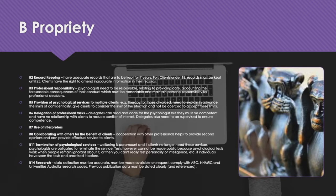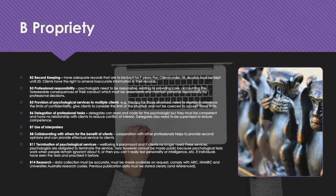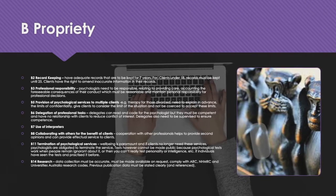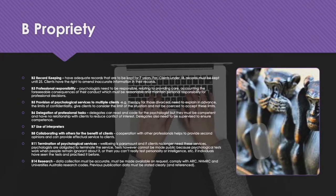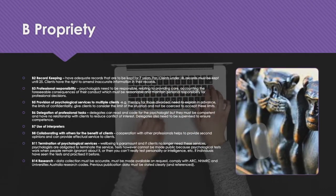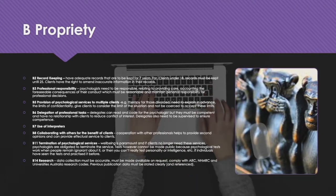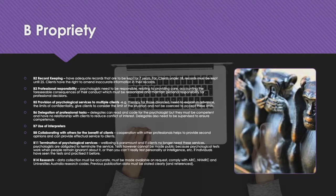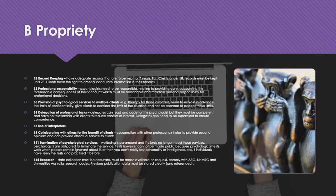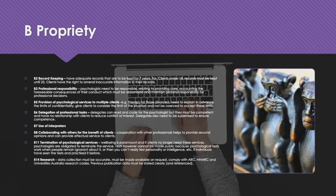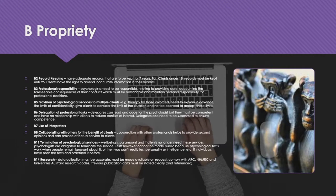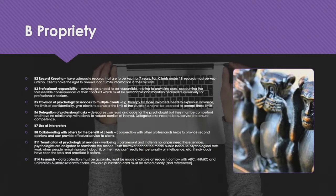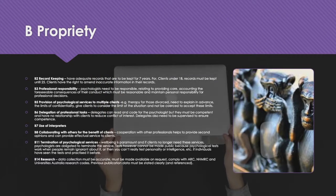Cooperation with other professionals helps provide second opinions and can provide effective service to clients. B11 covers Termination of Psychological Services — well-being is paramount, and if clients no longer need these services, psychologists are obligated to terminate them. Tests, however, cannot be made public because psychological tests work when people remain ignorant about them — if individuals have seen the tests and practiced them before, you can't really test personality or intelligence. B14 and C7 state that data collection must be accurate, made available on request, and comply with ARC, NHMRC, and Universities Australia Research Codes. Previous publication data must be stated clearly and referenced.